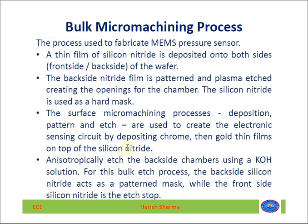The backside silicon nitride acts as a pattern mask and the front silicon nitride acts as an etch stop. The KOH will start to etch the silicon substrate until it reaches the silicon nitride, where it will stop the process. This means it will completely remove the silicon from the chamber region, so the silicon nitride will be visible or open from the backside.